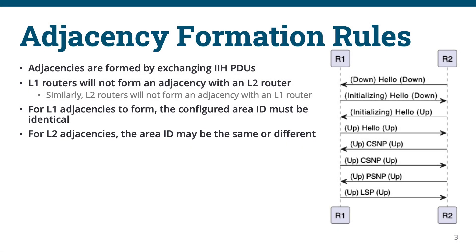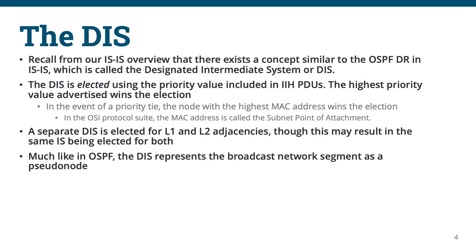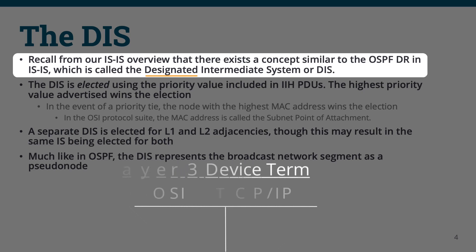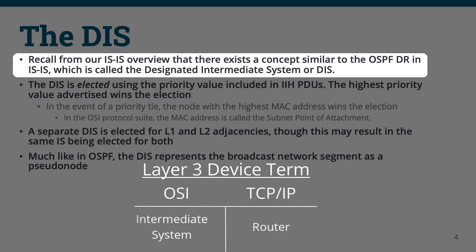Now let's take a look at the designated intermediate system. The ISIS protocol has a device role which is very similar to the designated router in OSPF. They're obviously even named similarly, both being designated devices — the term used in each protocol stack to reference a Layer 3 device which connects Layer 2 domains.